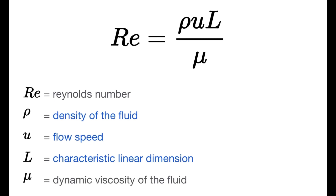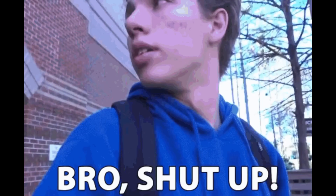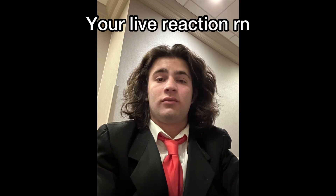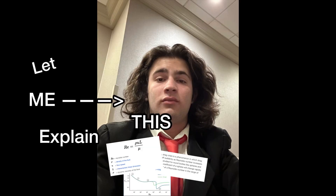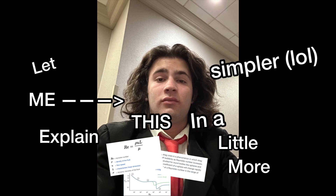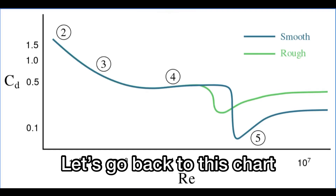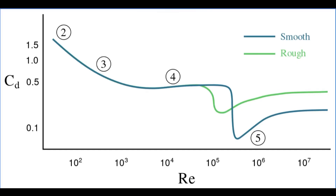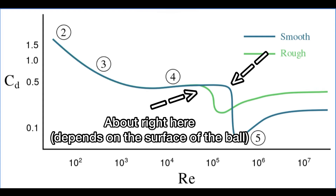The dynamic viscosity of air is 1.81 × 10⁻⁵ kg/(m·s). To put it in simpler terms: when the Reynolds number goes higher, the drag coefficient goes lower, but at a certain point it drops significantly, causing erratic movement of the ball.